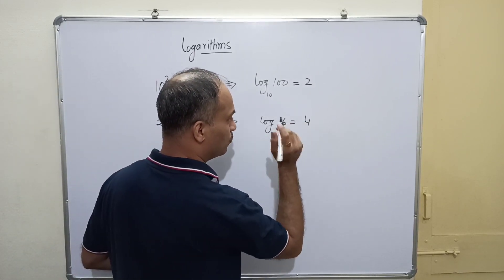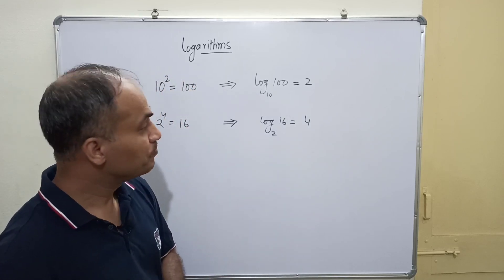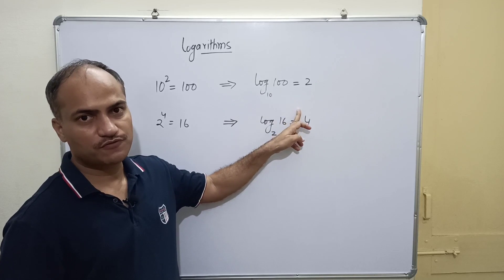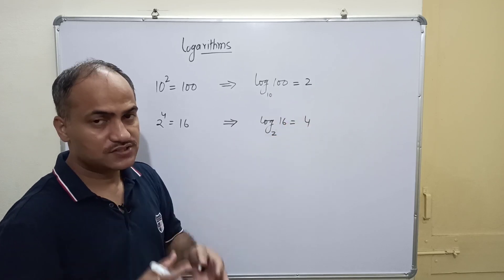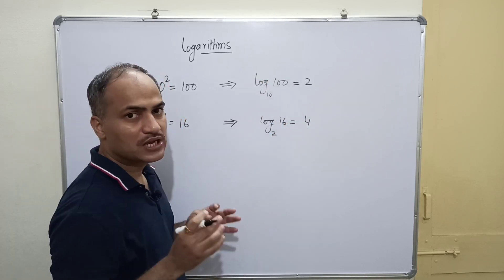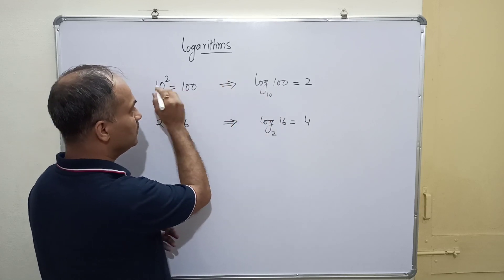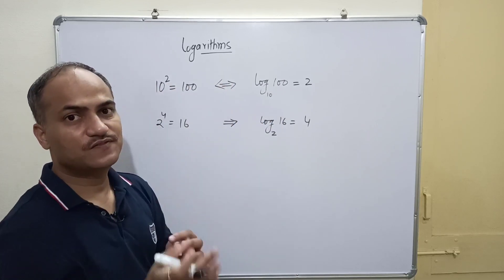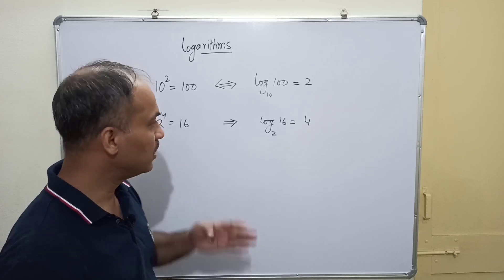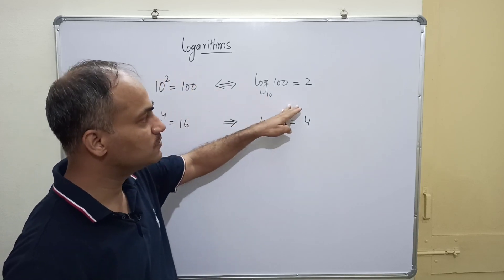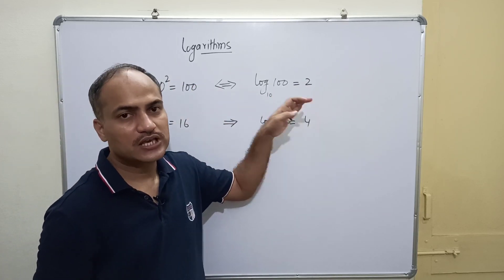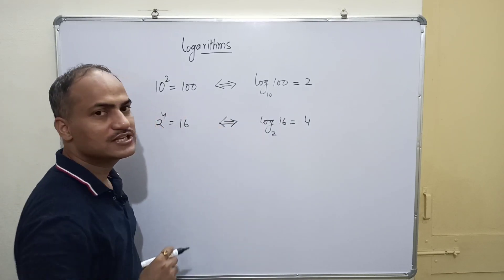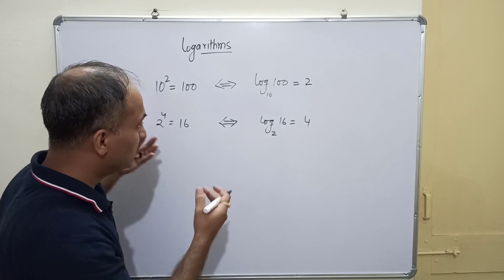The exponent is 4, so the value is 4. This information can be written in terms of logarithms, and likewise, logarithm information can be written in exponential form — both imply each other. So the two forms are interchangeable.